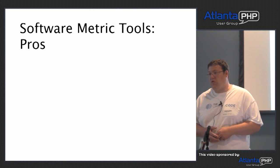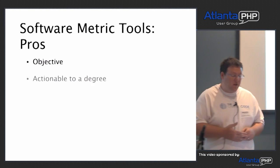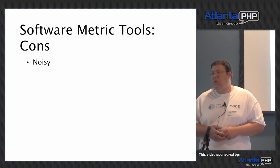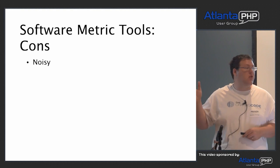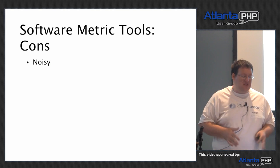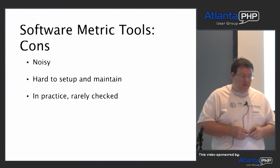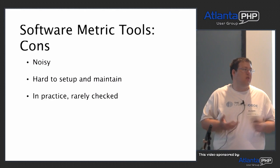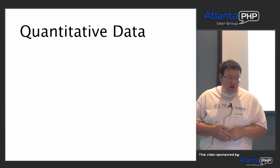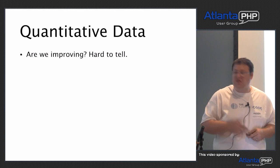When it comes to qualitative information, it's really hard to know if we're getting better. There are also software metrics tools we can use to get a quantitative measure. The benefits are that they're objective and actionable. But a lot of times we find these are noisy — anyone use PHP Mess Detector? It has a lot of things it does and it's really noisy. They're hard to set up and maintain, and in practice because they're noisy, nobody really ever looks at them. So with quantitative data, it's also really hard to tell if we're getting any better.